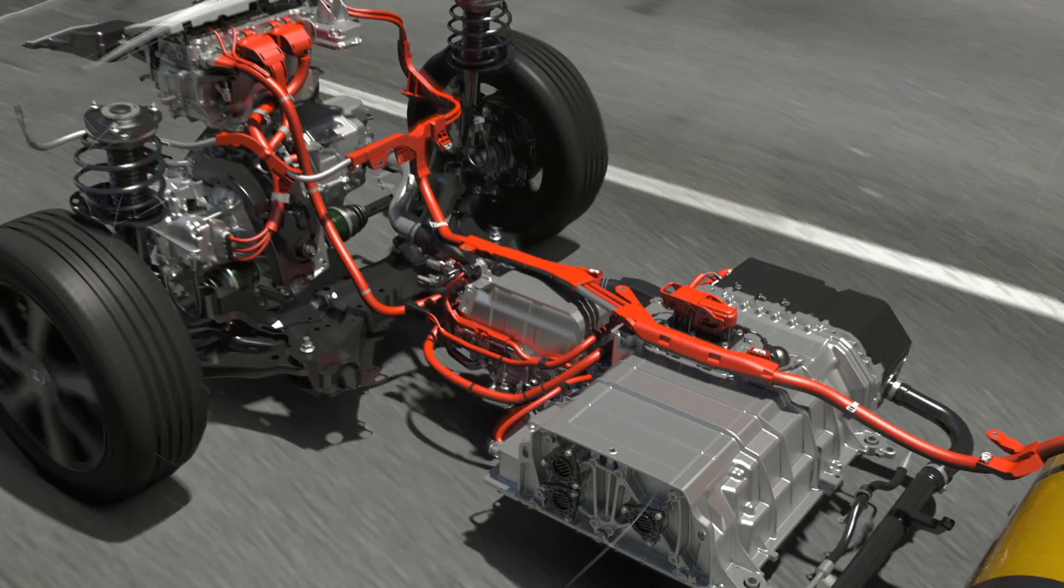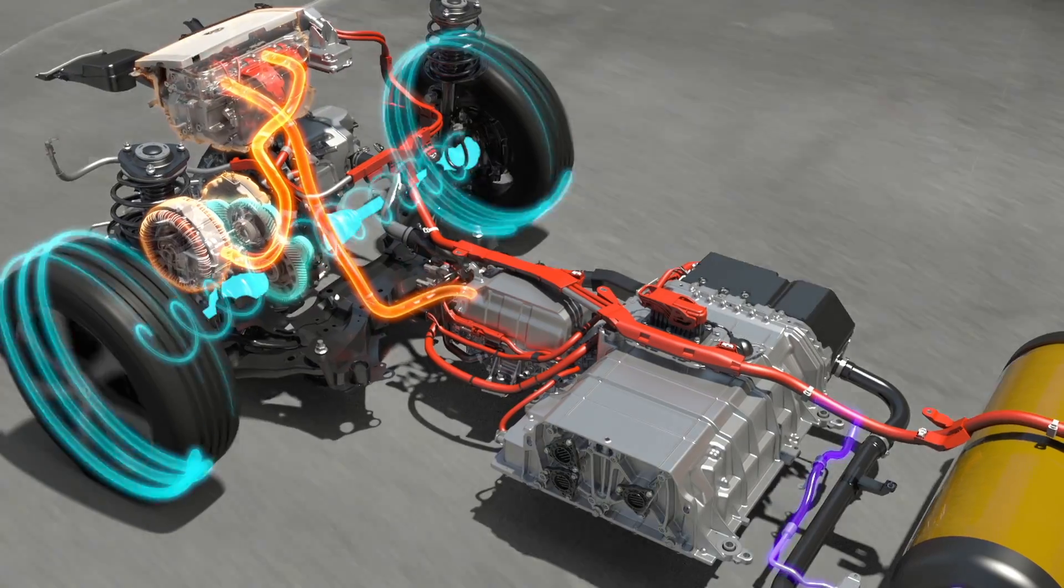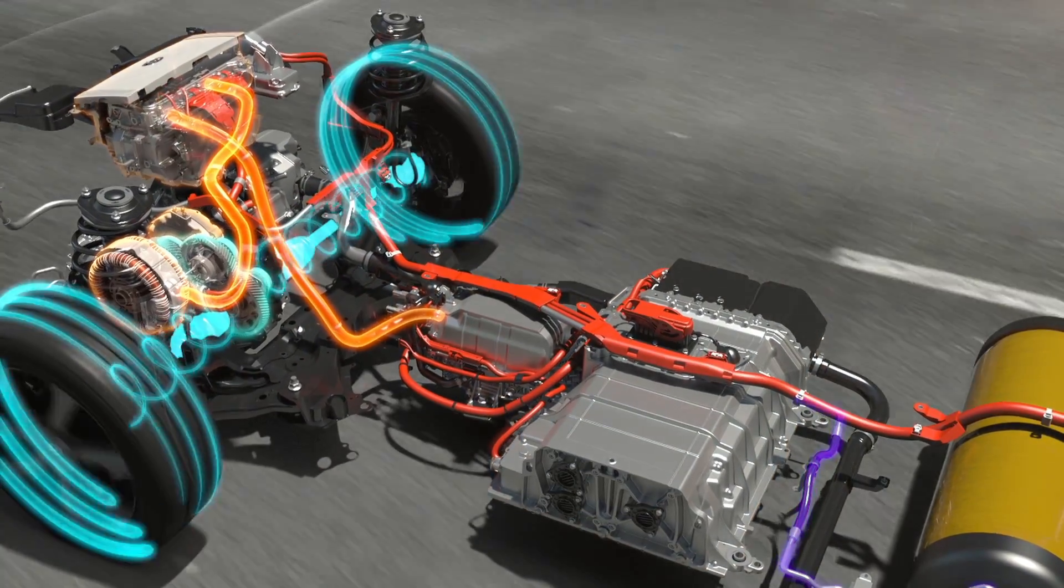Hydrogen and oxygen come together in the fuel cell stack to supply the electricity to the electric motor via the power control unit.